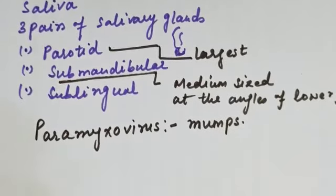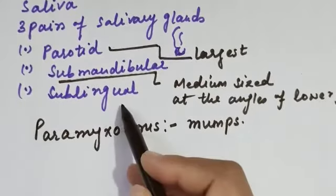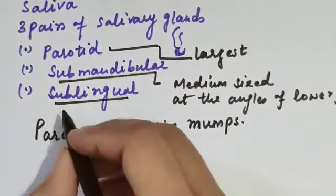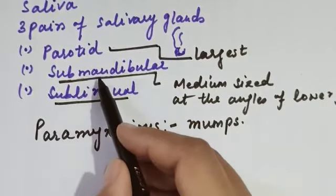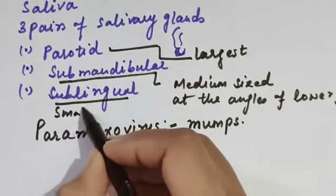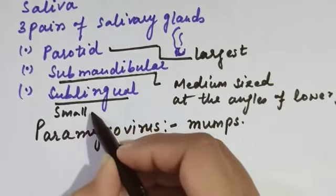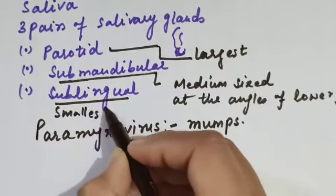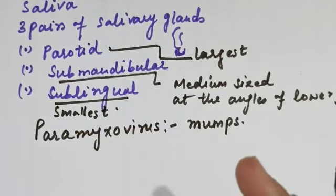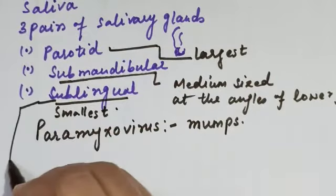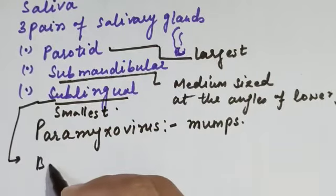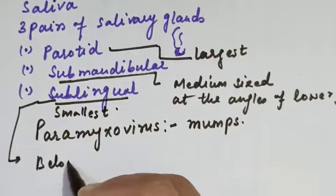The last pair is the sublingual glands. They are the smallest of the salivary glands, located below the tongue.